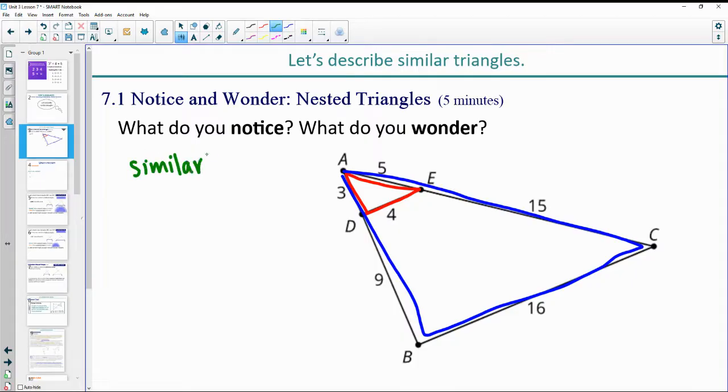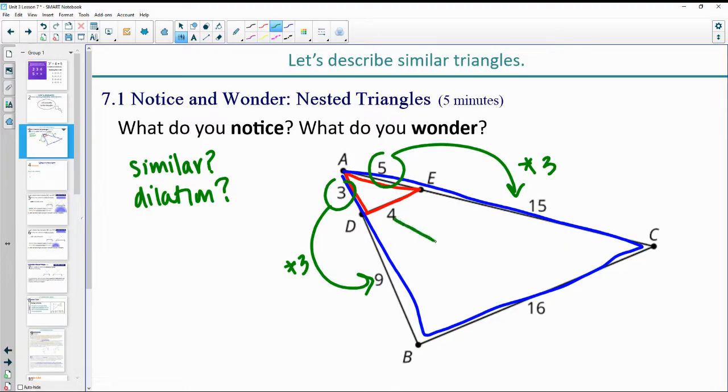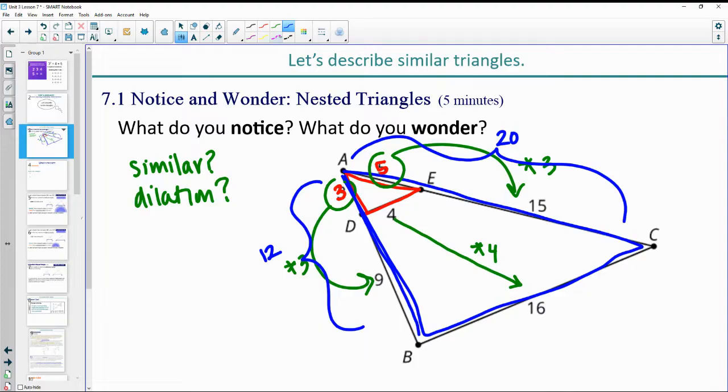Maybe you noticed five up to 15 is multiplying by three, and you noticed the same thing on this side. And then you noticed here that four times three is not 16. So you notice that this one was times four. Maybe that made you recognize that this three and the five were from the red triangle, and that actually this whole blue triangle's length is five and 15, or 20. And this whole length here is the three and the nine, so 12 total, which then three times four is 12 and five times four is 20.